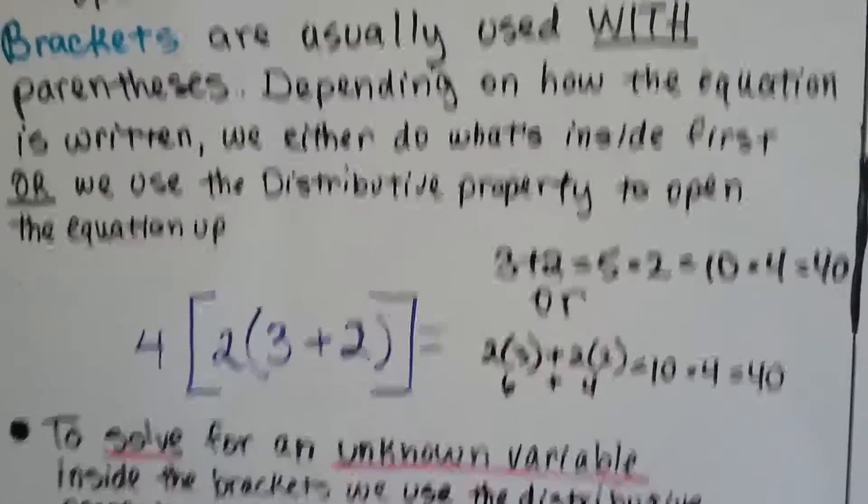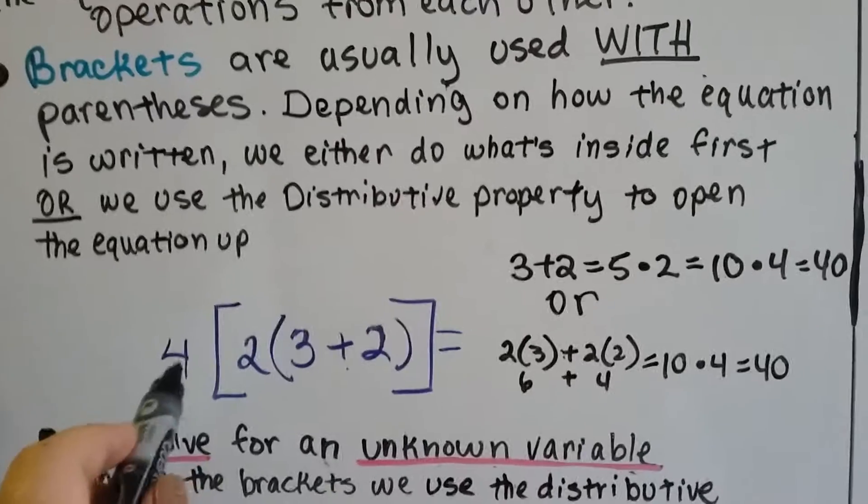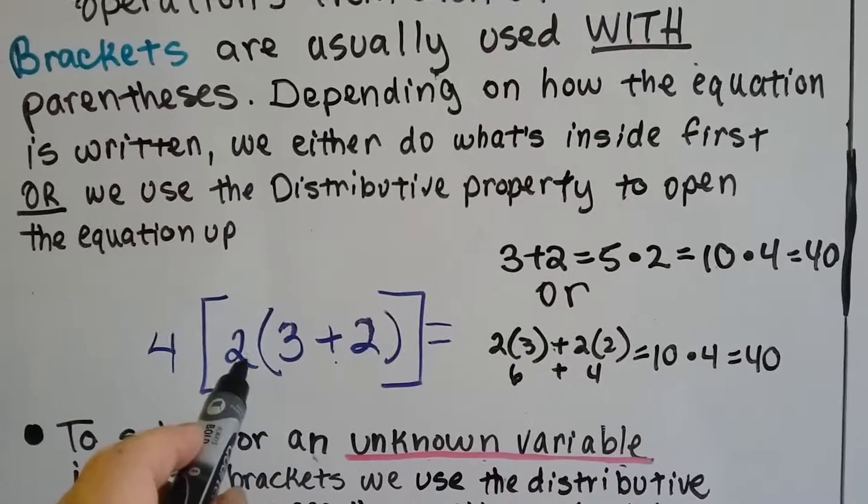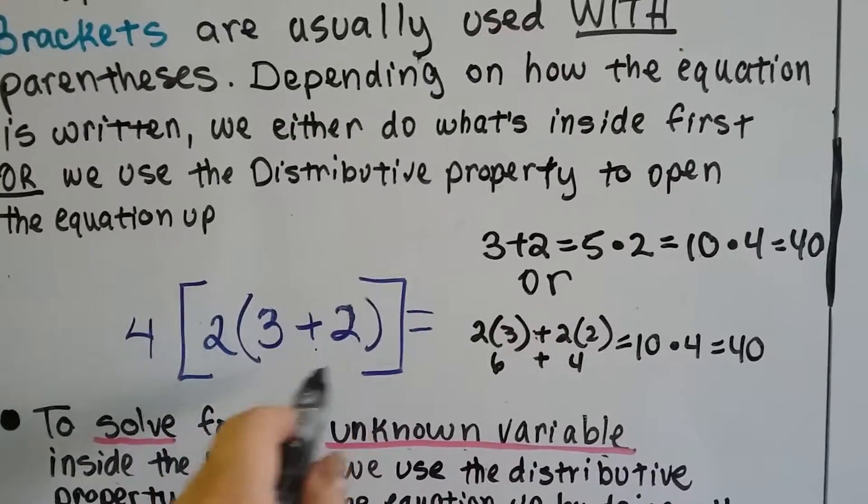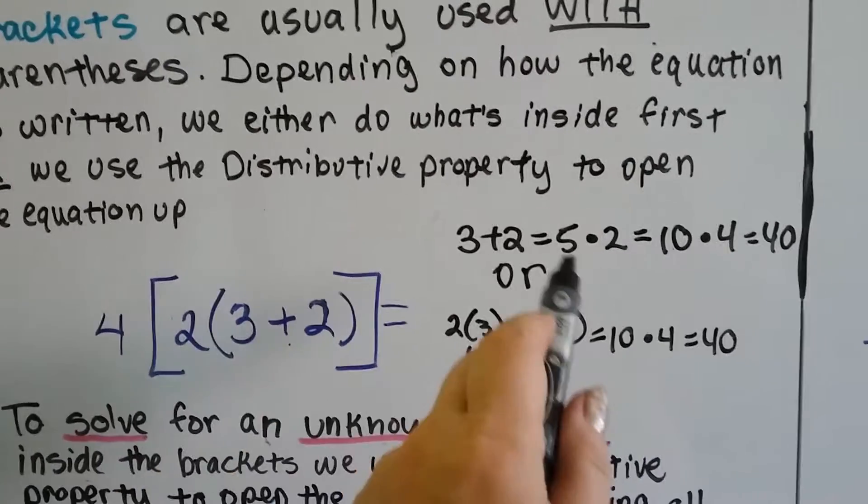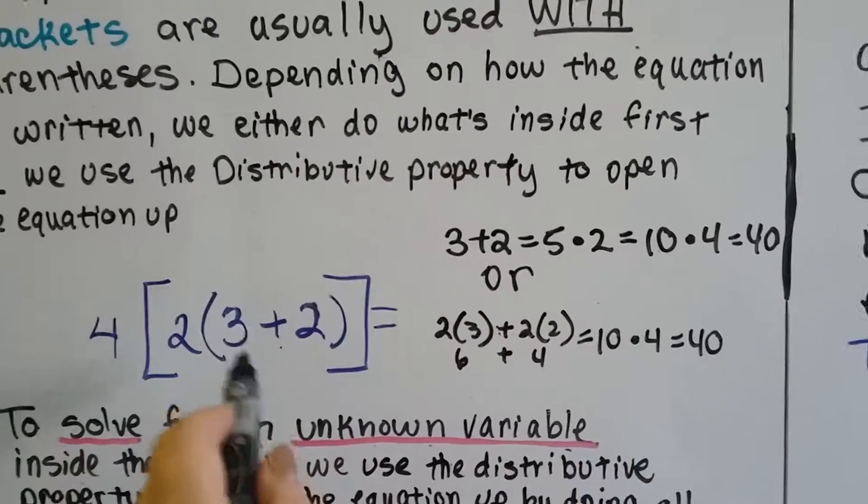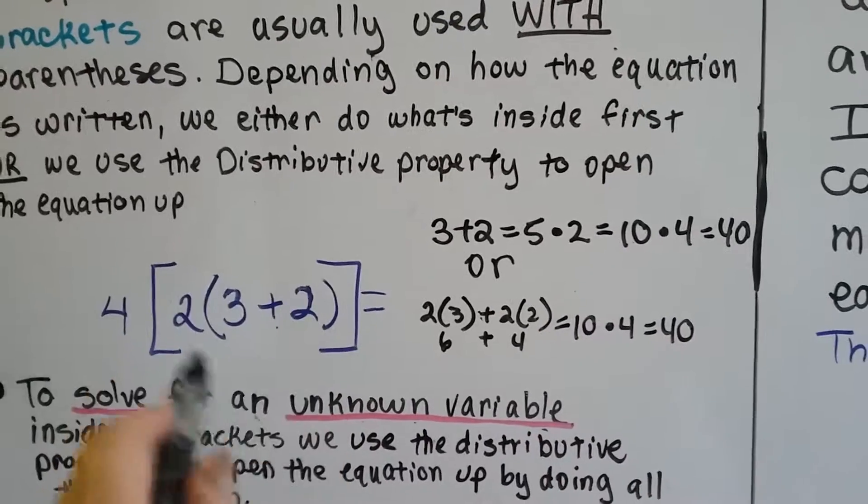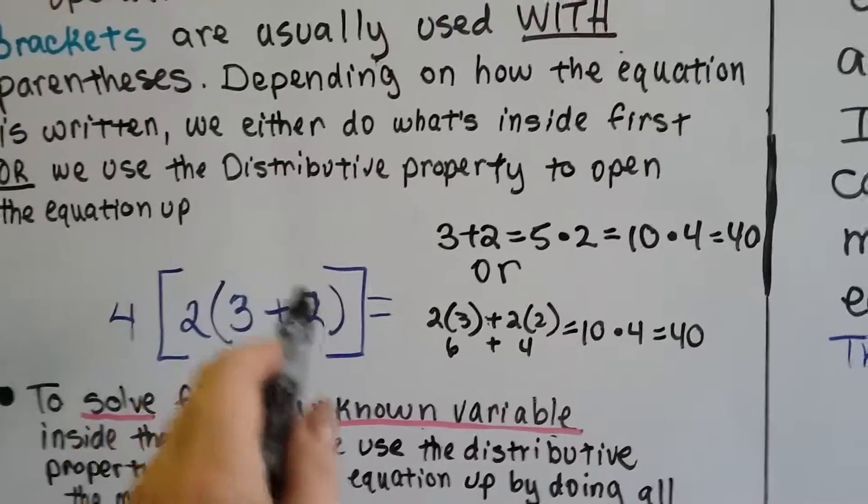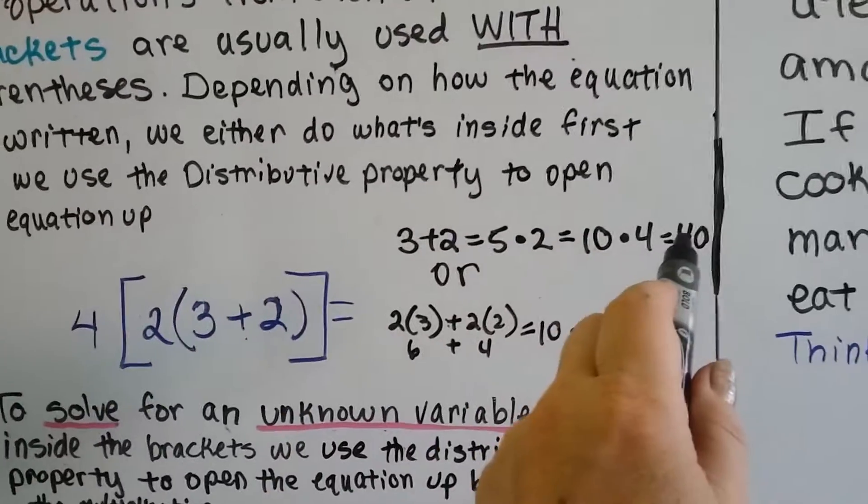Take a look at this one right here. We've got 4 times 2 times 3 plus 2. We can either start on the very inside here and do 3 plus 2 is 5, and then multiply the 5 times the 2 to get 10, and then multiply this whole thing inside that equaled 10 times 4 to get 40.